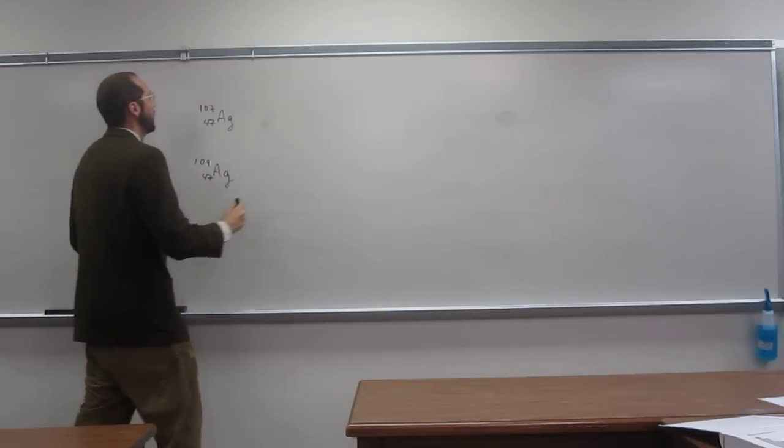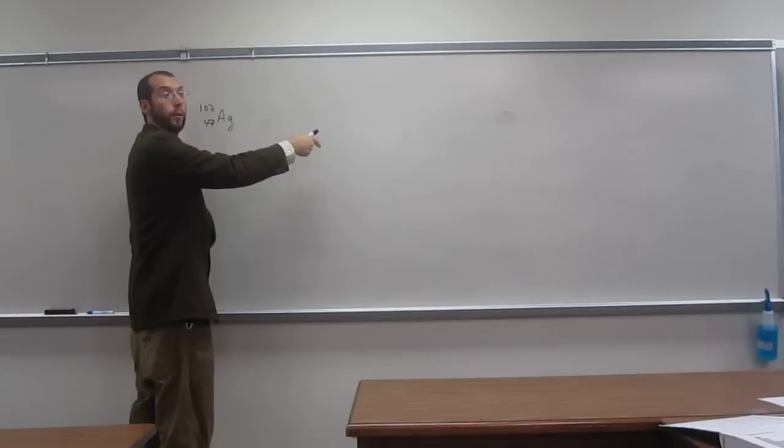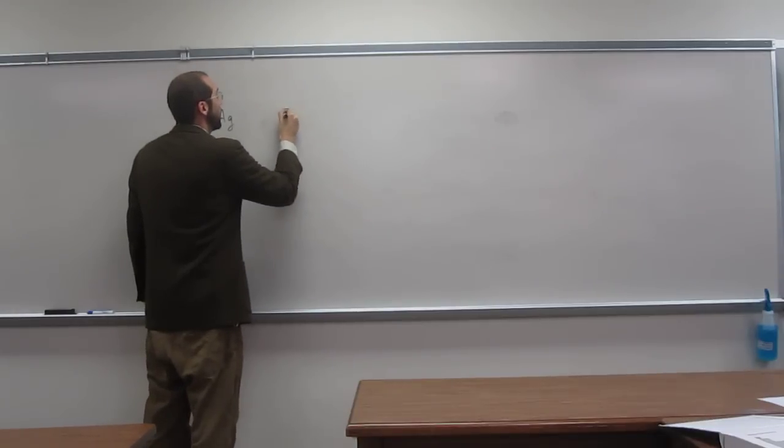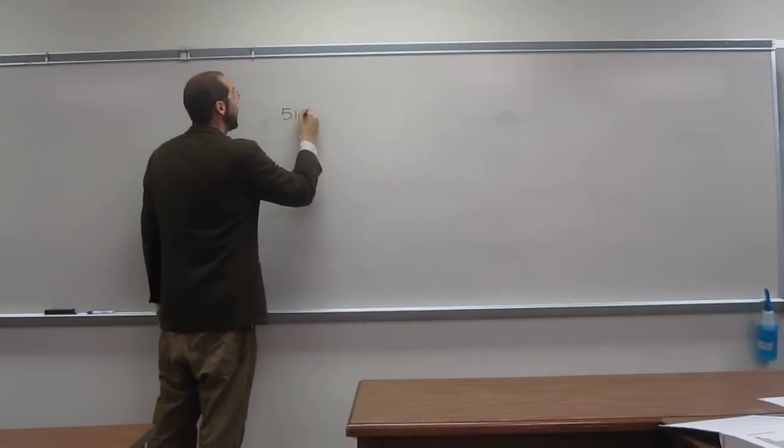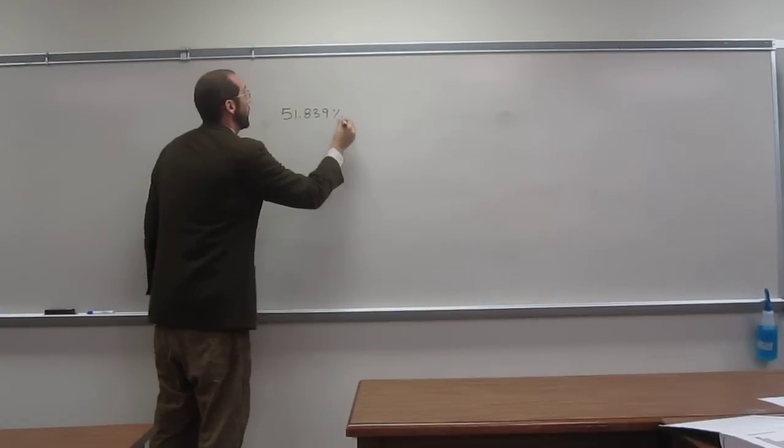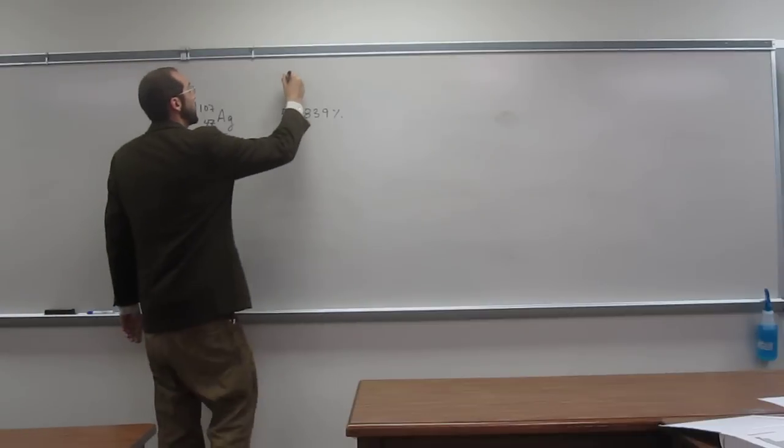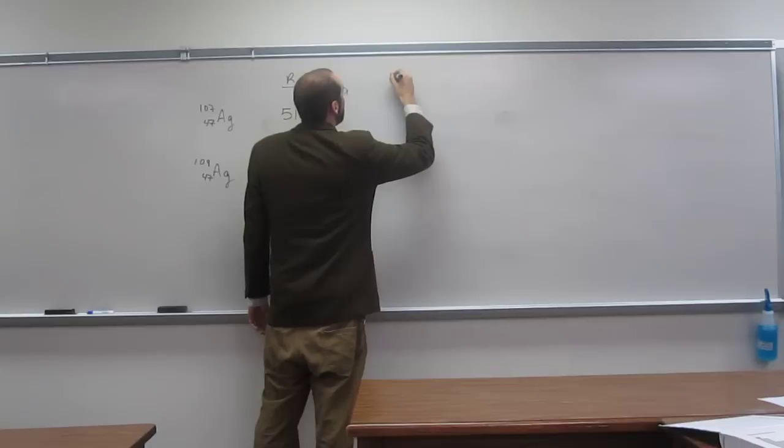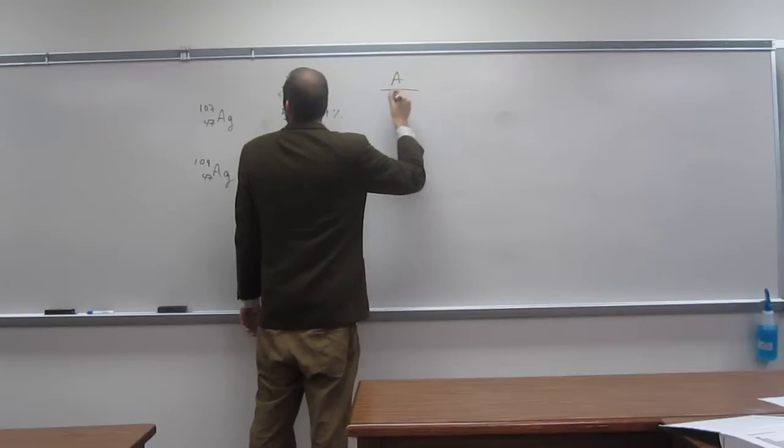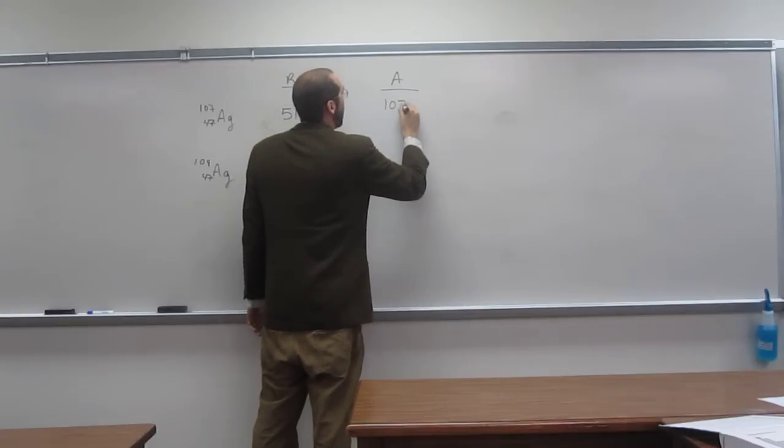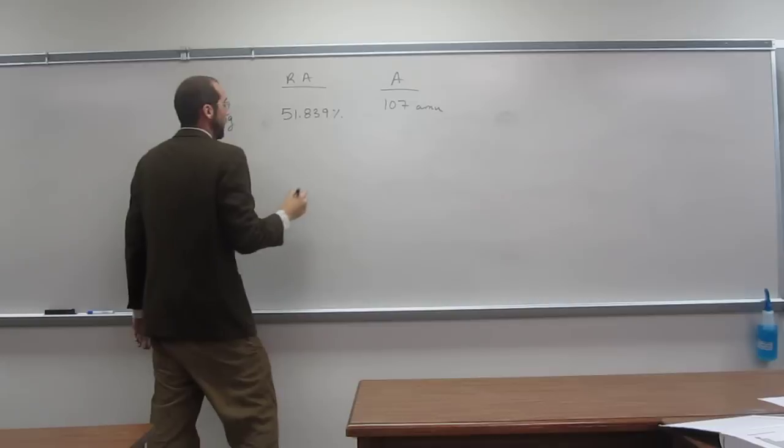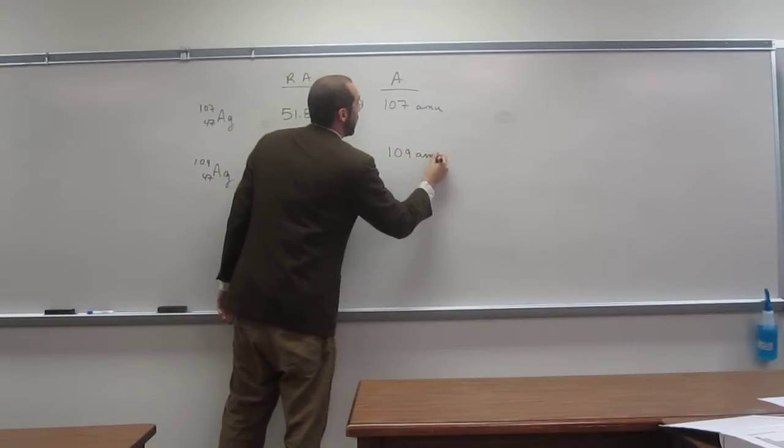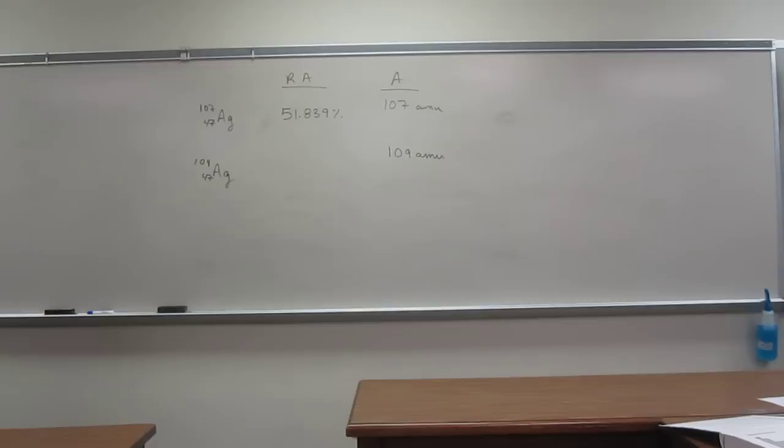So now we want to figure out what the relative abundance of each one of these things is. It says the one is 51.839 percent. This is relative abundance. And then we'll say the mass is 107 amu. And we know the mass down here is 109 amu.